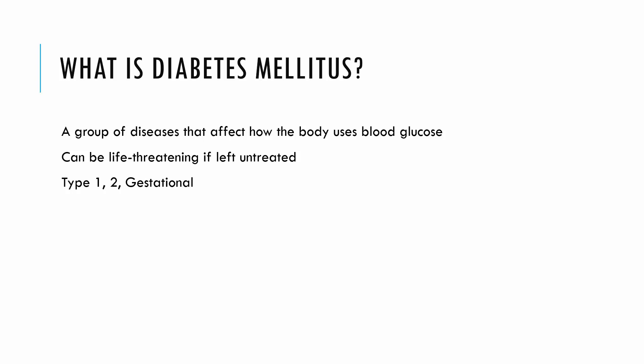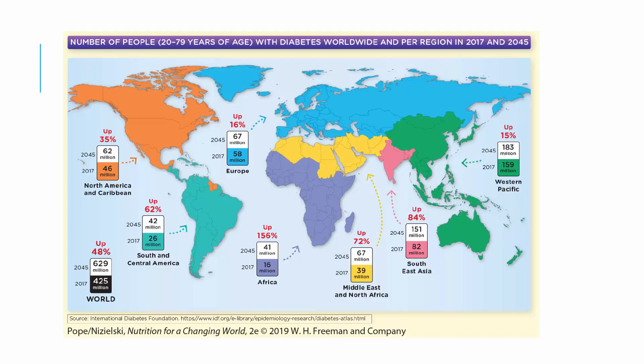Let's transition to talk about diabetes, covered in spotlight A right after chapter four. Diabetes is a group of diseases that can affect how our body uses and processes blood glucose. It can be life threatening if left untreated. We'll talk about three major types: type one, type two, and gestational diabetes. Worldwide, they expect diabetes to increase about 48% between now and 2045.